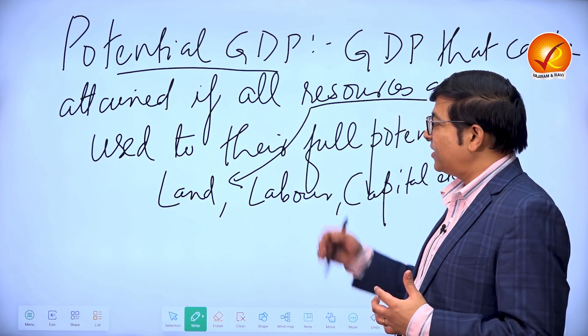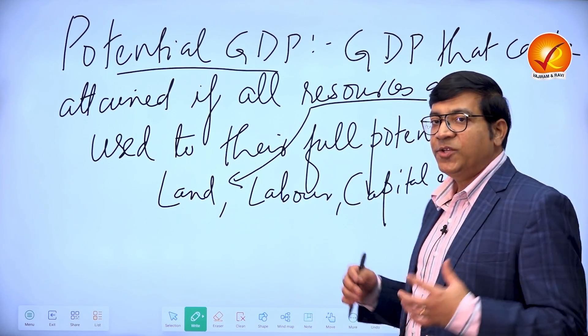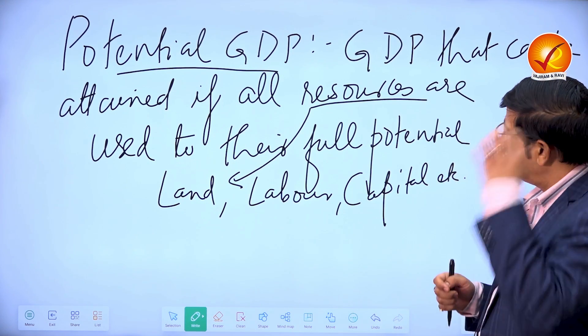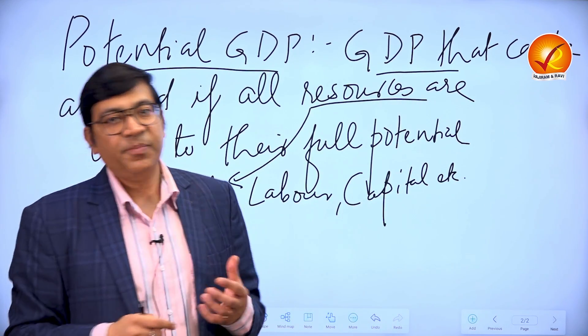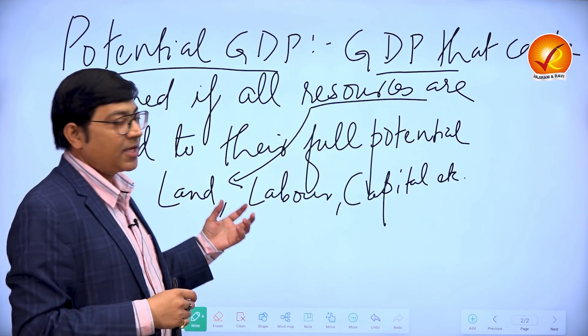So when factors of production, whether it is natural, labor, capital, they are used to their full potential, then the GDP that can be achieved, the total money value of production that can be achieved, we call it potential GDP.